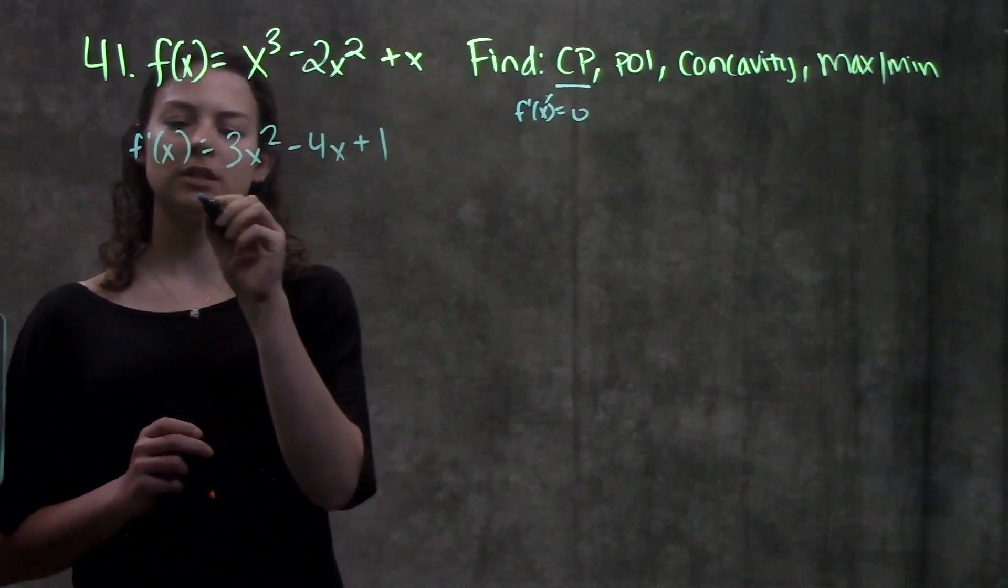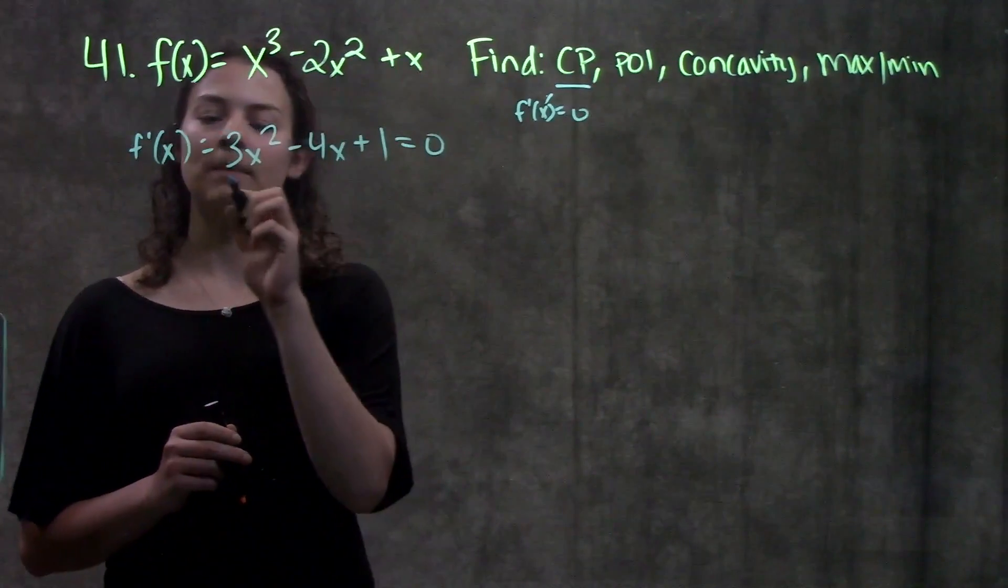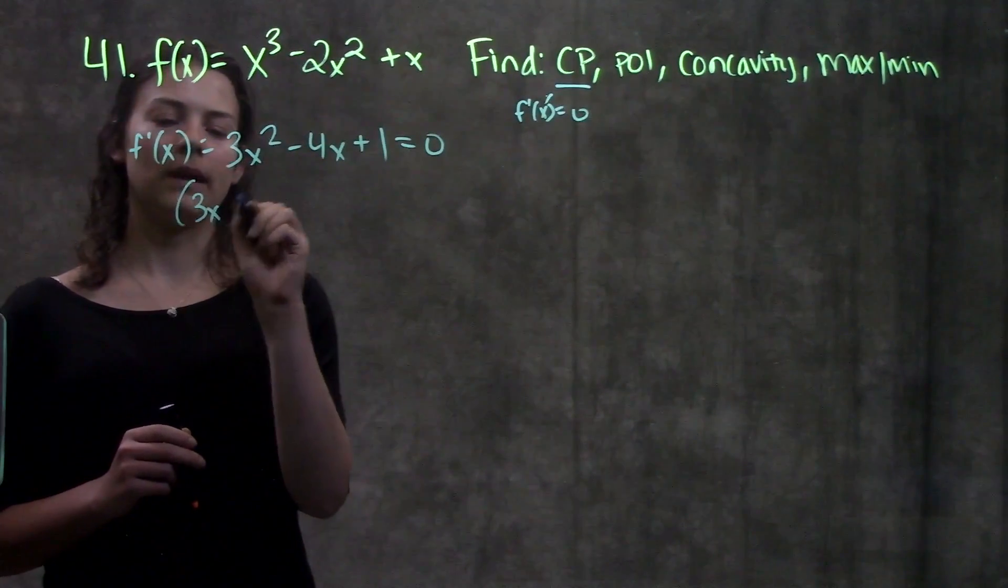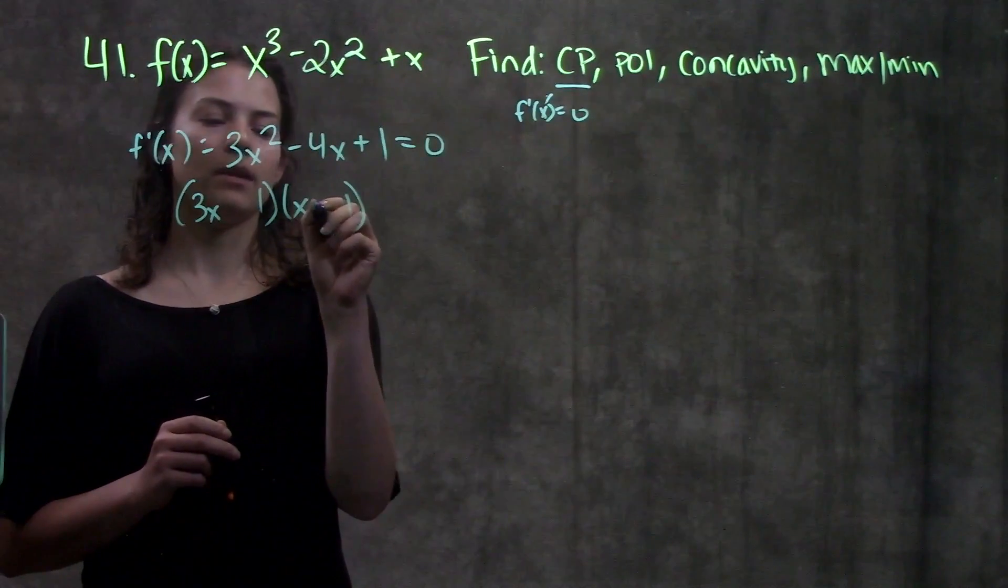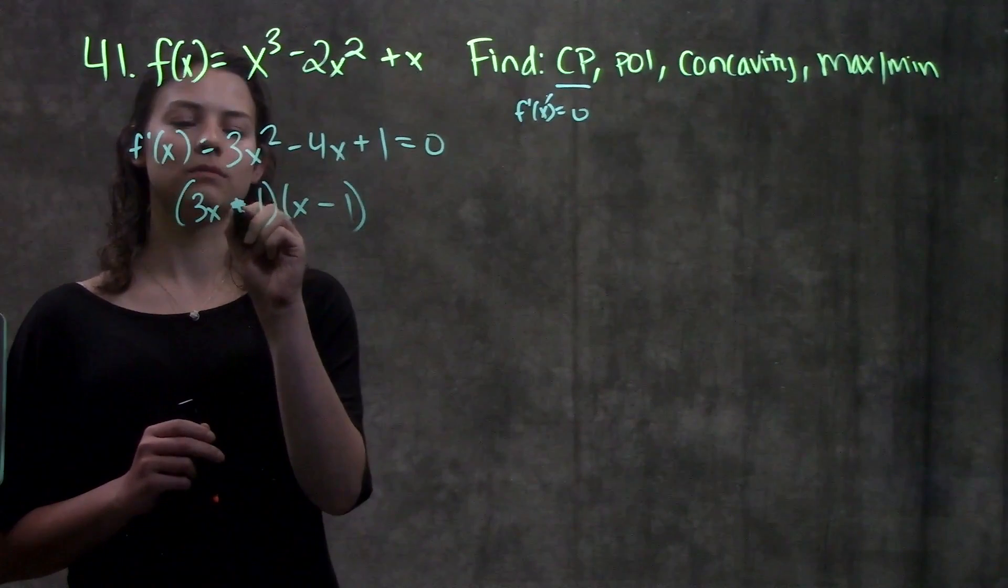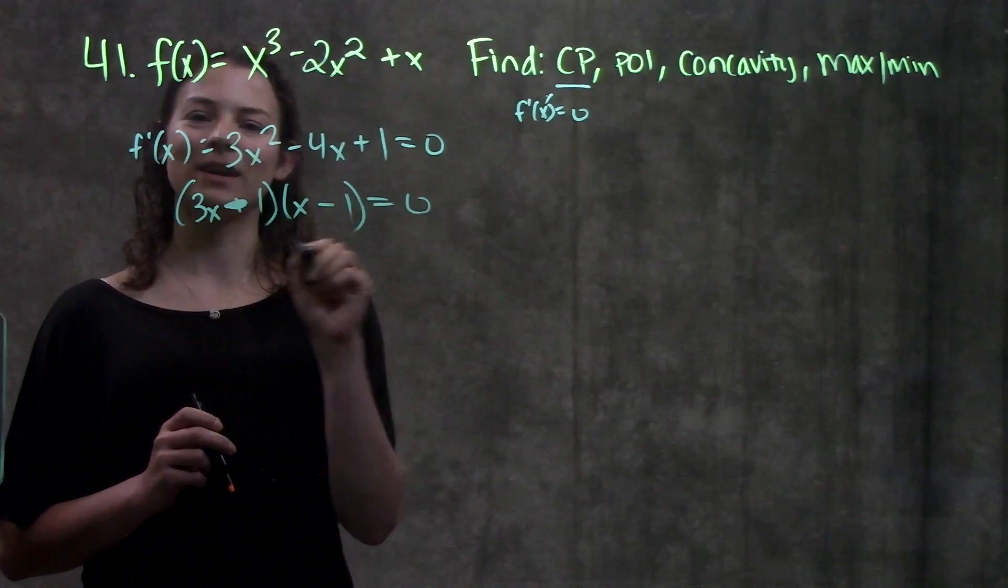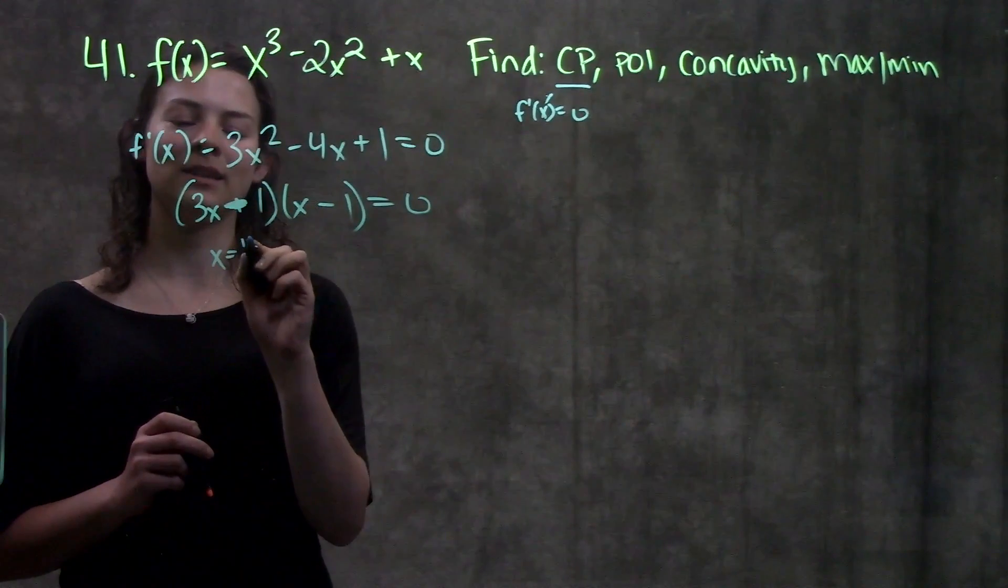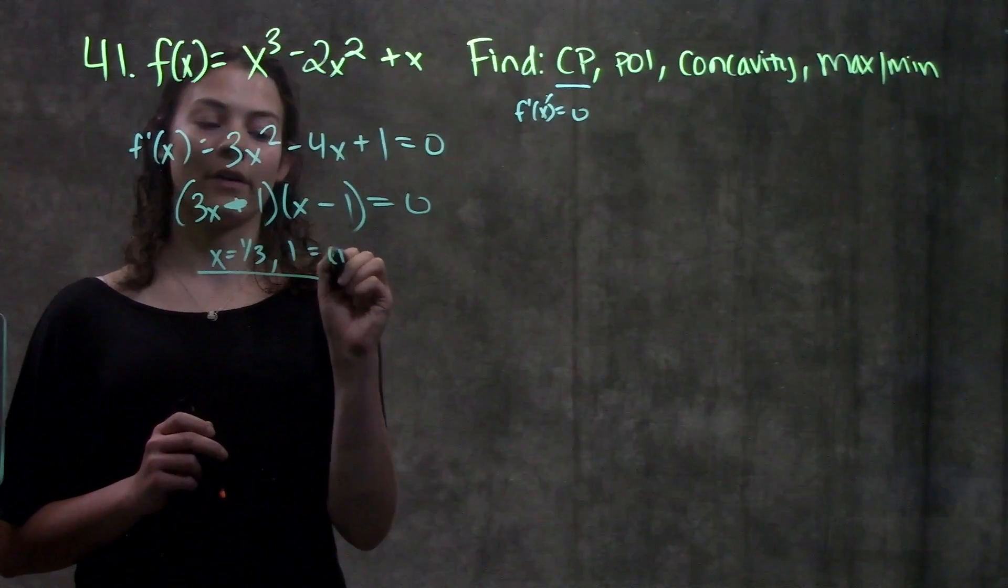Now we need to take this function, set it equal to zero, and as you see, we have a quadratic, so we'll need to factor it down. So we have 3x and x. We want a negative in the middle, so this will become x minus 1 and 3x minus 1. And when we set this equal to zero and solve for x, we get that x equals 1 third and x equals 1. So these are our critical points.